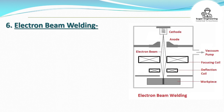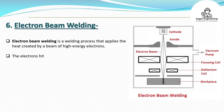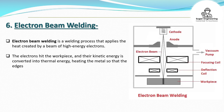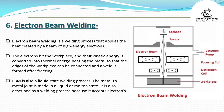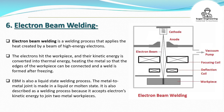6. Electron Beam Welding. Electron Beam Welding is a welding process that applies the heat created by a beam of high-energy electrons. The electrons hit the workpiece and their kinetic energy is converted into thermal energy, heating the metal so that the edges of the workpiece can be connected and a weld is formed after freezing. EBM is also a liquid-state welding process, where the metal-to-metal joint is made in a liquid or molten state, accepting electrons' kinetic energy to join two metal workpieces.